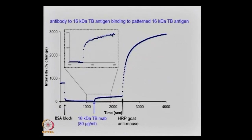In case you basically want something that's much more obvious, when you have the precipitation you can actually see the signal already. We introduced the HRP goat anti-mouse and the TMB substrate, and you can see the enhancement in signal — this is actually a very big intensity change. I'm reading at 3,000 — that's a 3,000 percent intensity change.